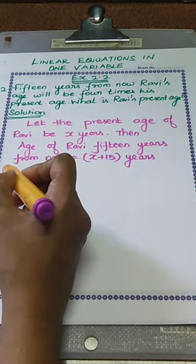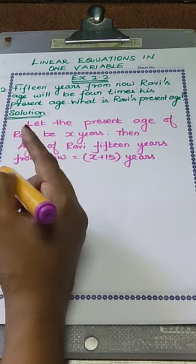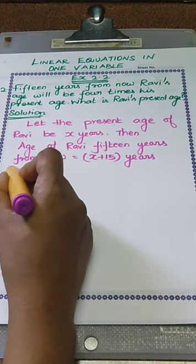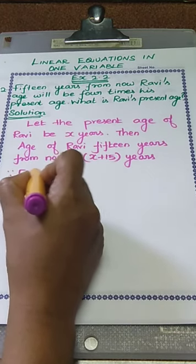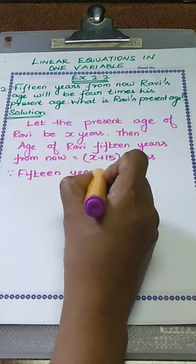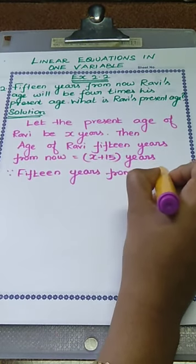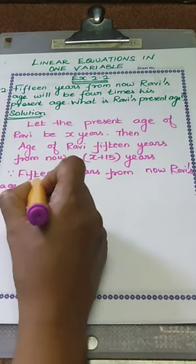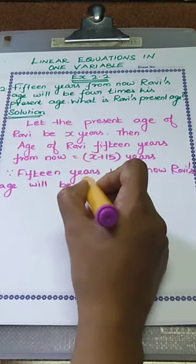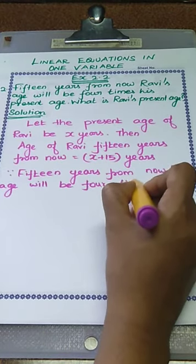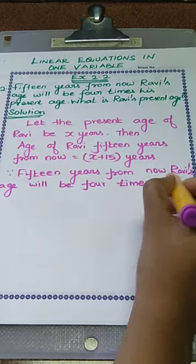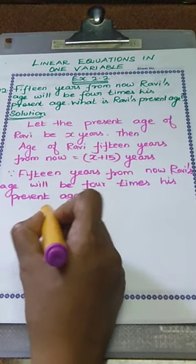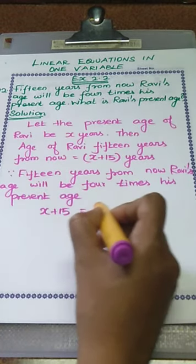According to the question, we have to take: 15 years from now, Ravi's age will be 4 times his present age. That is the main clue. So we have to write x plus 15 is equal to 4x.